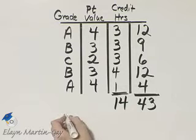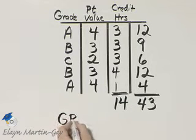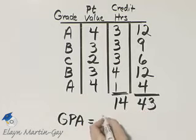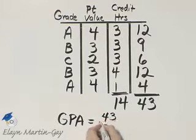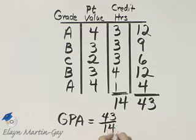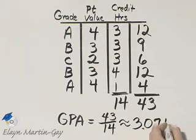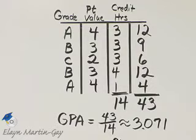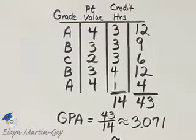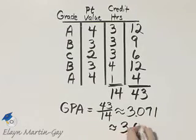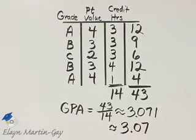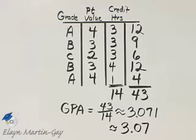Here is how you find your grade point average. It's this product sum, 43, divided by the number of credit hours you're taking. We've approximated that to three point zero seven one. Then we'll round it to the nearest hundredth, and that is three point zero seven. Your grade point average given those grades and those credit hours is three and seven hundredths, approximately.